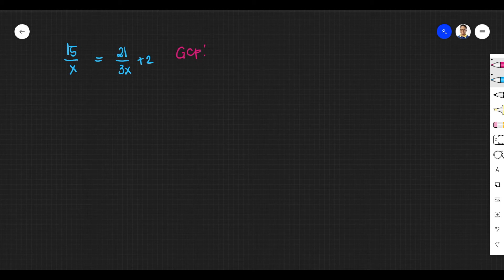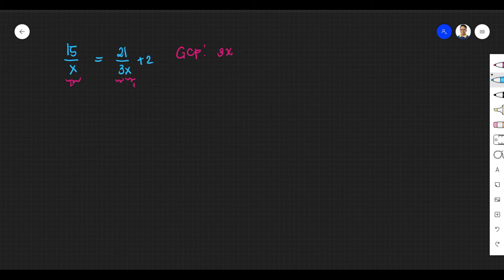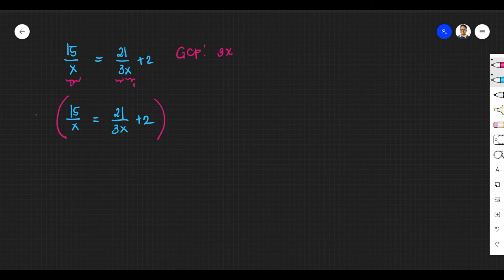Based on the previous example, we take the denominators of our rational equation. We have x here, another x here, and 3 here. Since x is written twice, take it one time only, and include the other denominator, which is 3. The greatest common factor is 3x. Let's multiply the entire equation by the greatest common factor 3x.